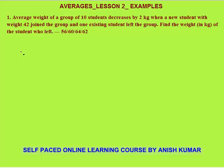This is valid for each and every question of this video lesson. So the first question is: the average weight of a group of 10 students decreases by 2 kg when a new student with weight 42 kg joins the group and one existing student left the group. Find the weight of the student who left. Now the one concept is: average is total divided by n. Initially the number of students is 10, but we don't know their average. Let's assume that their average weight was a.